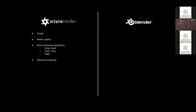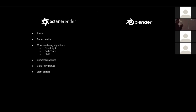Another Octane benefit is a better sky texture. The quality looks more realistic in Octane Render. Also, Octane has light portals, which we don't have in Cycles. If you're lighting a room and there's a light outside with glass, it's very hard for light to penetrate and illuminate the scene. With light portals, you can assign materials through the glass, telling the engine to concentrate more photons or calculations there — it cleans up the image much faster, especially for interiors. It's a very powerful tool.